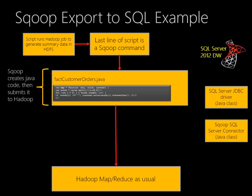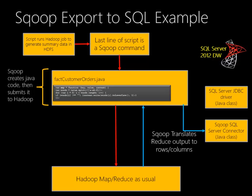Hadoop does receive that Java program, knows what to do with it, and runs through the MapReduce process as usual — that Java program might be sent out to a thousand nodes. When MapReduce is done, it sends the data back to Sqoop. Sqoop then translates that into something that looks like a table and sends it through a Sqoop connector, which is a Java class installed on the MapReduce cluster. That data passes through a JDBC driver that knows how to talk to SQL Server and update a table.